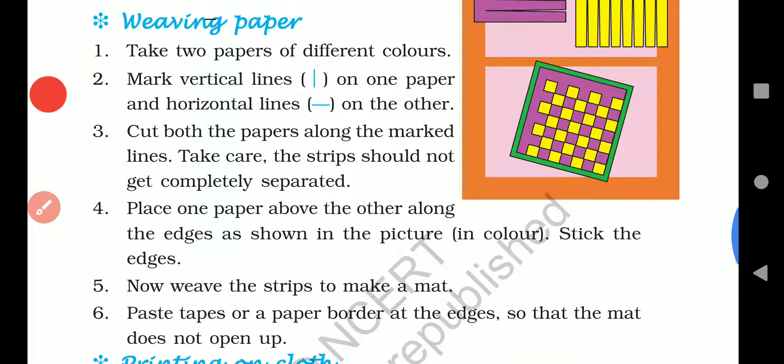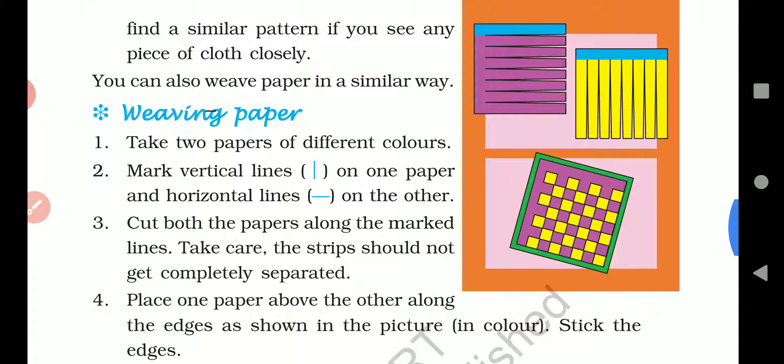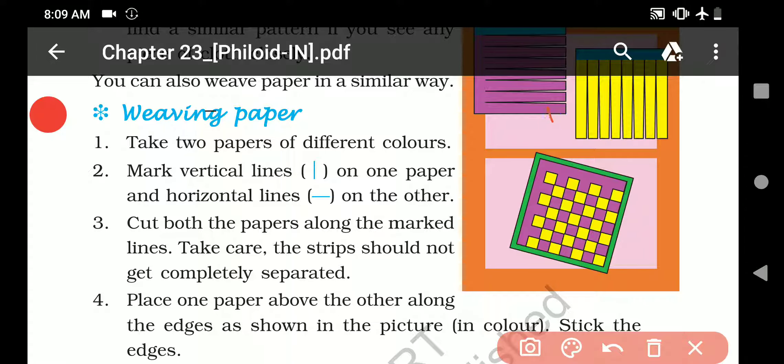Fourth, place one paper above the other along the edges as shown in the picture in color. Stick the edges. Now what you have to do is take these colorful papers. First place the pink paper below, take one strip. You have to take one strip at a time. First place the pink strip below, yellow above, then pink above, yellow below, then pink above, yellow below. This way you keep alternating.